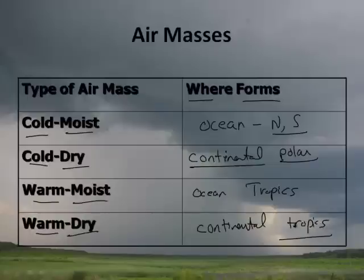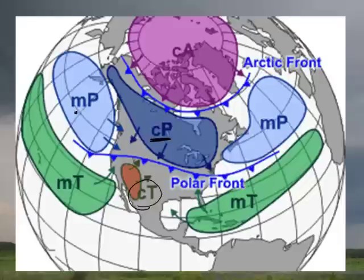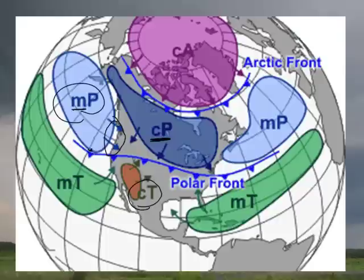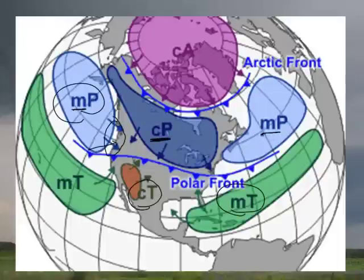If it's warm and dry, it forms on the continent — continental tropical. The typical one we're familiar with here in Colorado comes from Arizona — it's a very hot desert and that's a continental warm and dry air mass. Maritime polar air masses bring in lots of cold moisture. This is a cold rain forest. Maritime tropical forms over the tropical ocean.